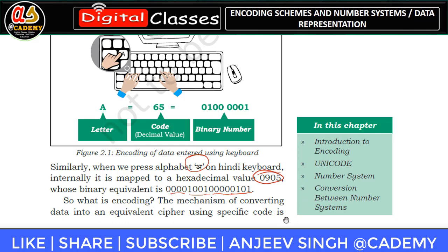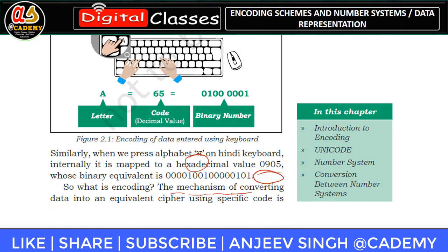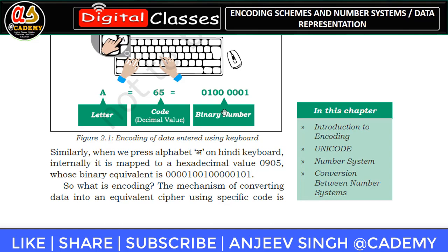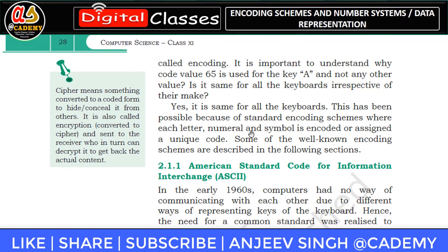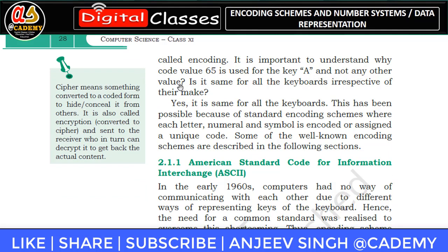So this encoding and binary code conversion happens through special mechanisms — special standard systems followed in computers. We first understand the term 'cipher.' Cipher means when any information is converted into a particular coded form to hide or conceal it from others. It is also called encryption. The receiver can decrypt it to get back the actual content. Such systems are called ciphers.